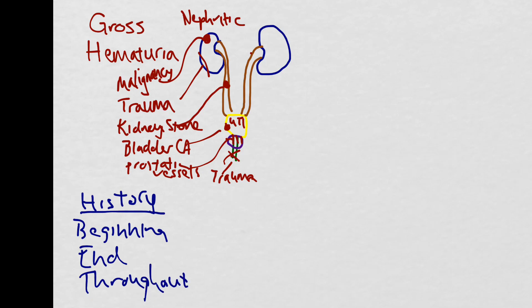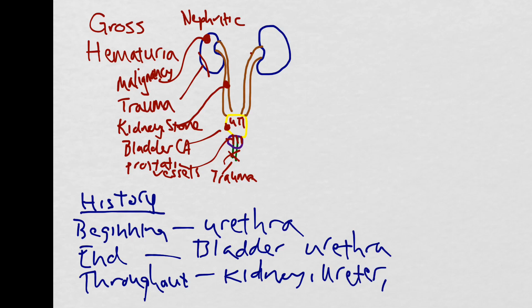If the bleeding is at the beginning of the stream, you want to consider disease at the urethra. If it's at the end of the stream, you want to consider disease at the bladder neck or the prostatic urethra. If it's throughout, you want to consider disease of the kidney, the ureter, or the bladder.